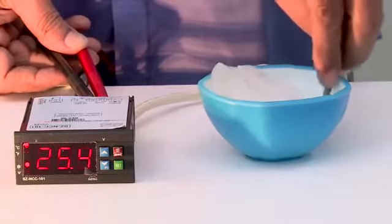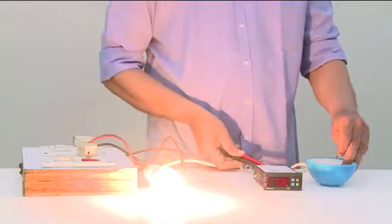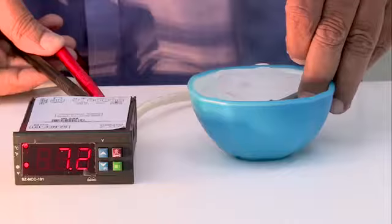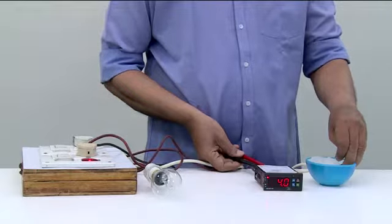We will now put the sensor in crushed ice. The controller is set to cut the temperature at 4 degrees. The bulb turns off, showing that the contacts are now open and the load is disconnected from the controller.